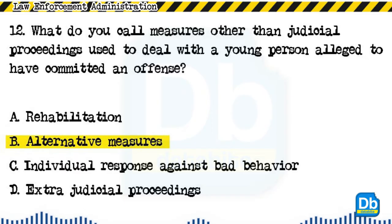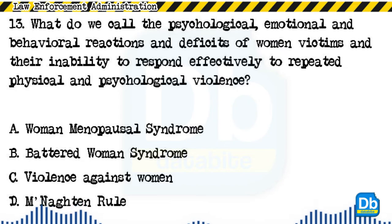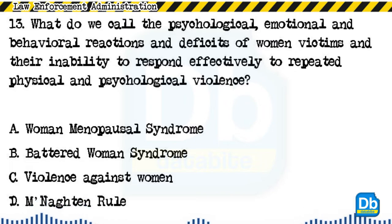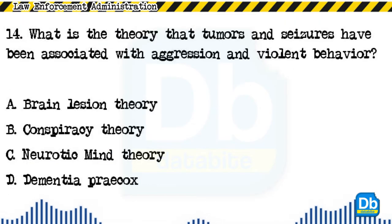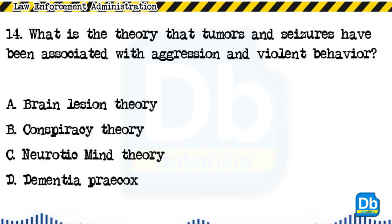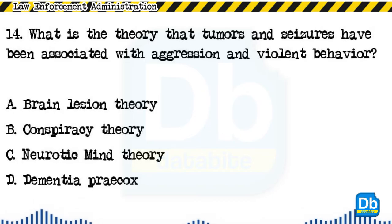The answer is B, alternative measures. Question 13: What do we call the psychological, emotional, and behavioral reactions and deficits of women victims and their inability to respond effectively to repeated physical and psychological violence? a) woman menopausal syndrome, b) battered woman syndrome, c) violence against women, d) monoton rule. The answer is B, battered woman syndrome. Question 14: What is the theory that tumors and seizures have been associated with aggression and violent behavior? a) brain lesion theory, b) conspiracy theory, c) neurotic mind theory, d) dementia precox.